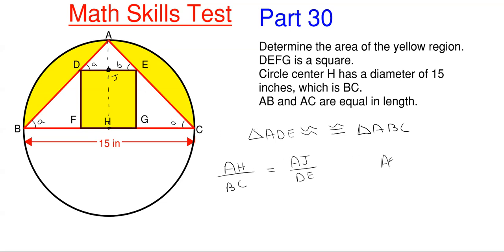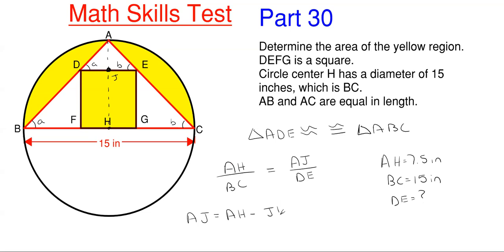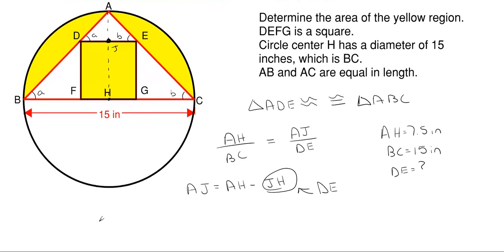AH is just going to be 7.5 inches because A aligns perfectly vertical with point H, which is the center. A is along the edge of the circle, so that is the radius. BC is just our diameter of 15 inches. DE is what we're looking for. AJ is just going to be AH subtracting off JH — the overall height subtracting off the height of the square. Since this is a square, JH equals the side of the square, which also equals DE. So AJ will be equal to AH subtracting off DE.